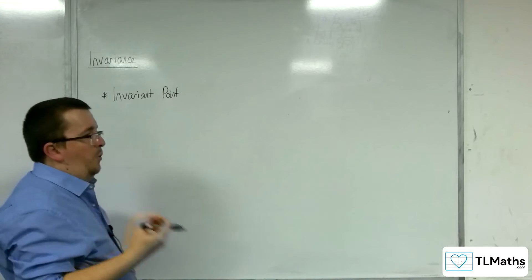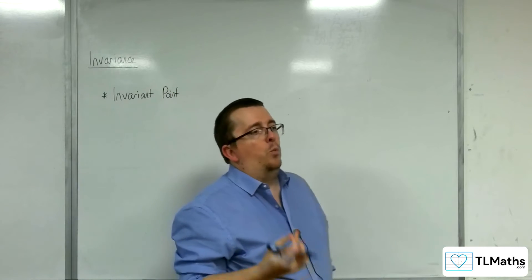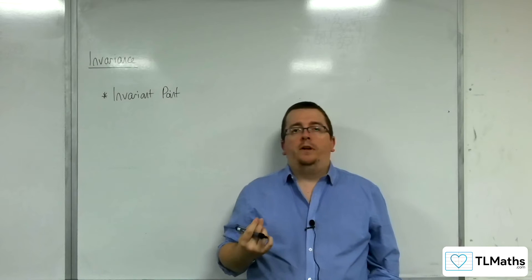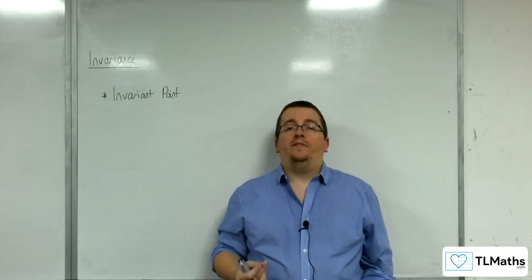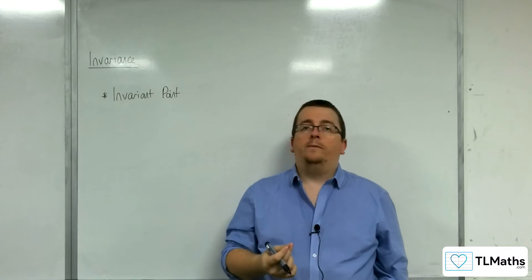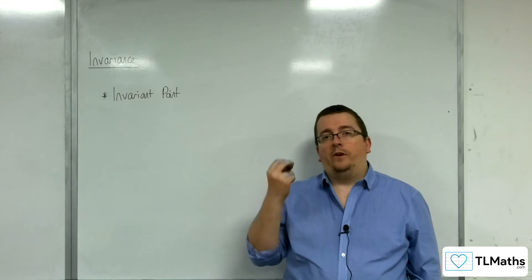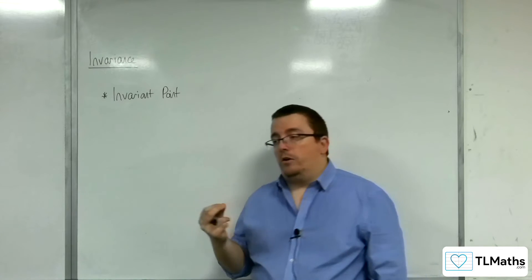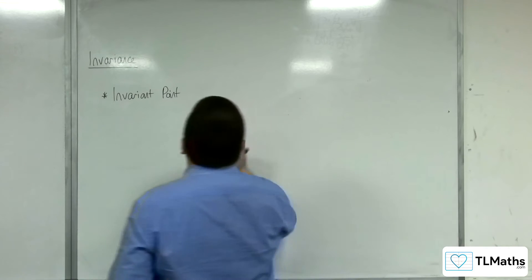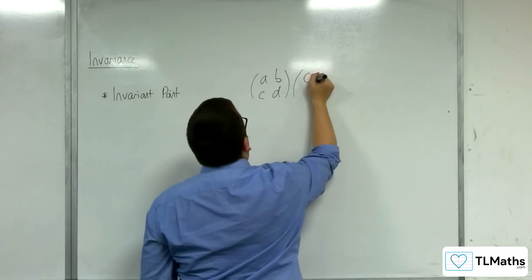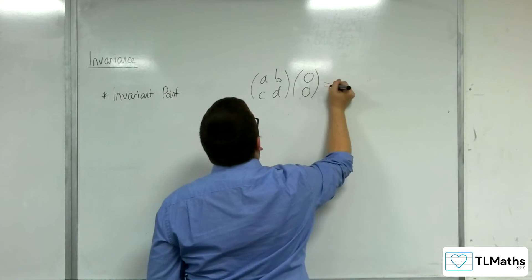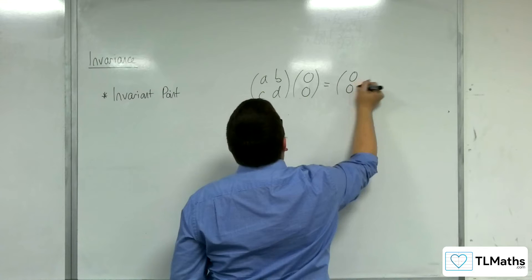Now there is one point in particular that will remain invariant for all transformations that can be represented as matrices. And that is the origin. Because if you have a matrix A, B, C, D, and you apply that to the coordinates 0, 0, you will get 0, 0.